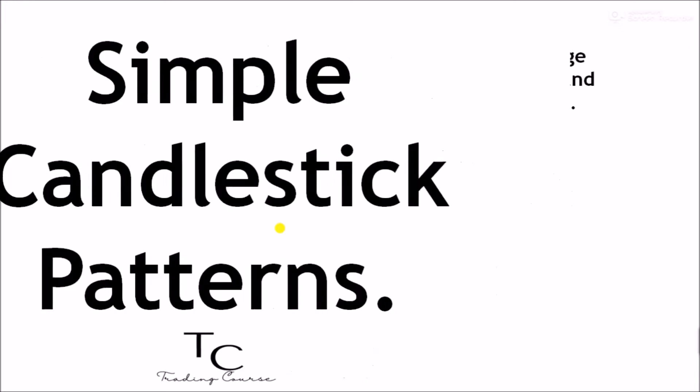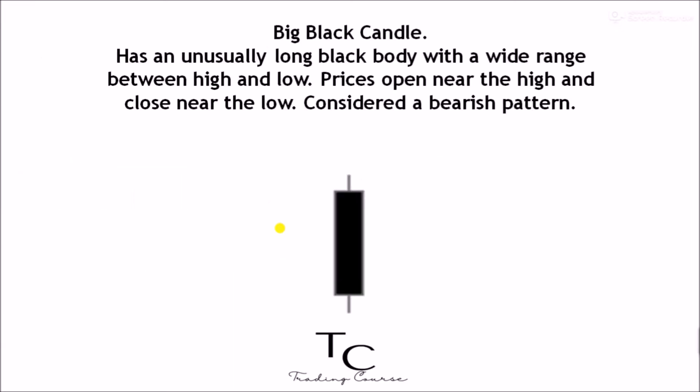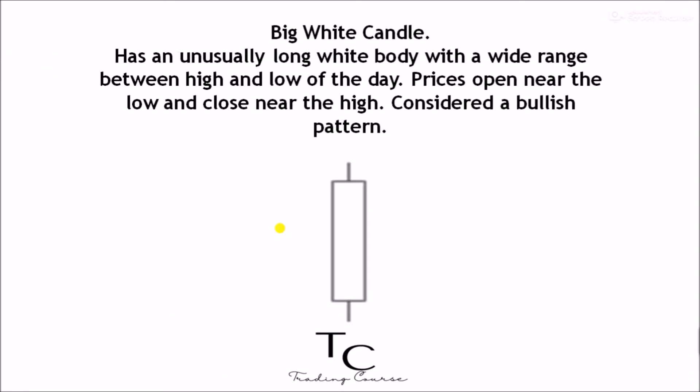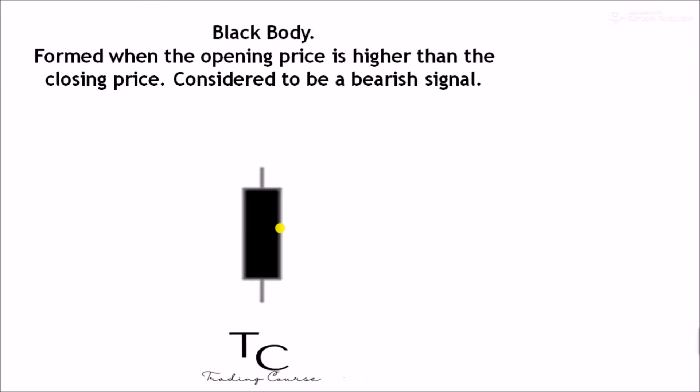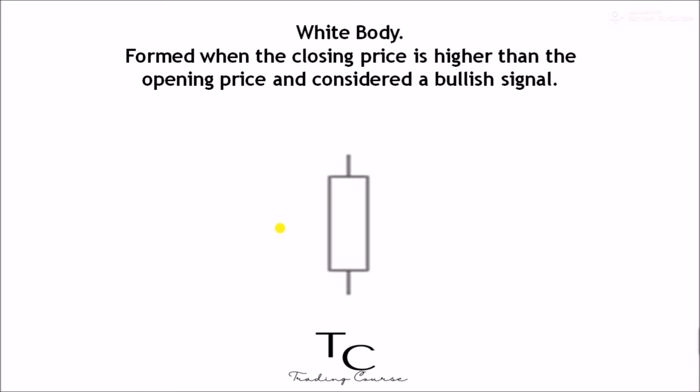Simple candlestick patterns: Big black candle — has an unusually long black body with a wide range between high and low. Prices open near the high and close near the low. Considered a bearish pattern. Big white candle — has an unusually long white body with a wide range between high and low. Prices open near the low and close near the high. Considered a bullish pattern. Black body — formed when the opening price is higher than the closing price. Considered a bearish signal.